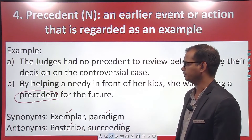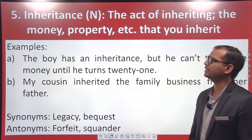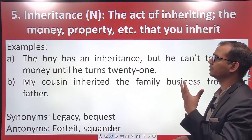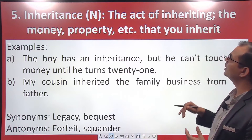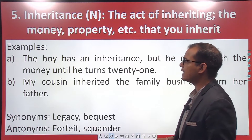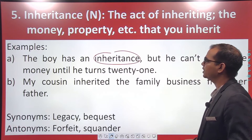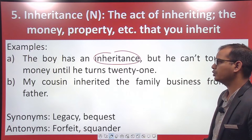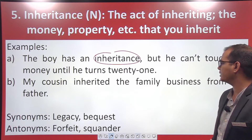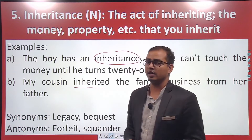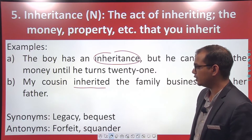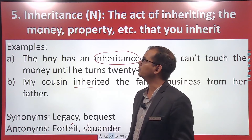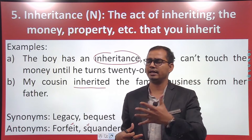The last word is 'inheritance.' Inheritance means anything received from a father or grandfather — money, property, etc. It refers to the act of inheriting money, property, and so on. For example: the boy has an inheritance but he cannot touch the money until he turns 21. Another example: my cousin inherited the family business from her father, meaning she received the business from him. Synonyms are 'legacy' and 'bequest'; antonyms are 'forfeit' and 'squander.' Forfeit means kisi cheez ko japt karna ya gawa dena; squander also means gawana. Inherit matlab praapt karna apne father ya grandfather se.